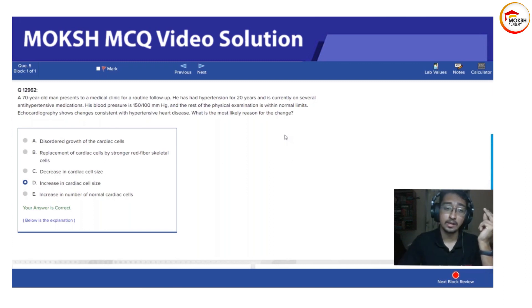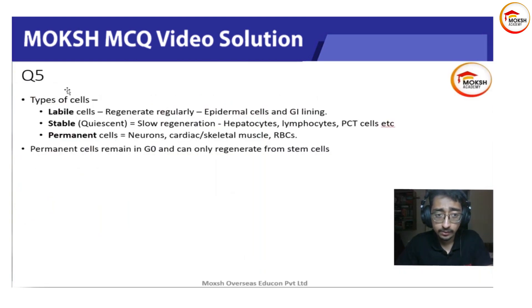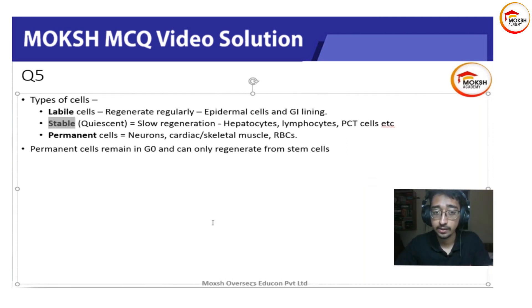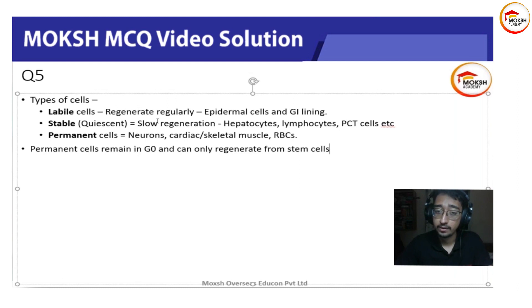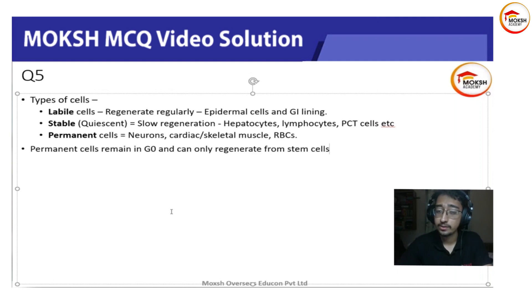But remember there are three types of cells: labile, stable, and permanent. Labile cells regenerate regularly — like your skin, the eye lining; they shed and new cells come up every day. Stable cells are those which have limited regeneration capability but they still divide — like hepatocytes.